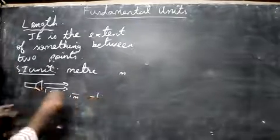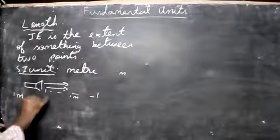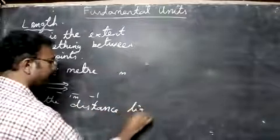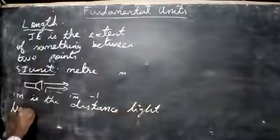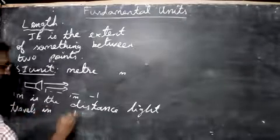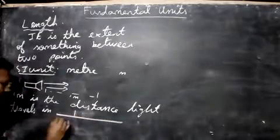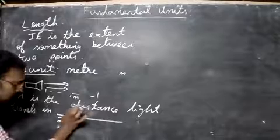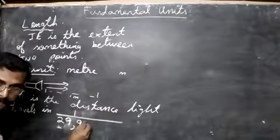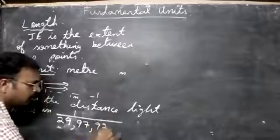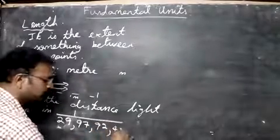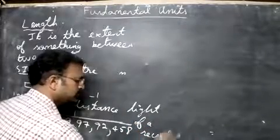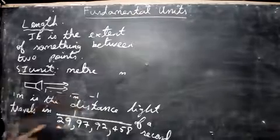One meter is the distance light travels in a fraction of a second. That fraction will be one divided by this number of a second. That means in a fraction of a second, light will travel one meter.